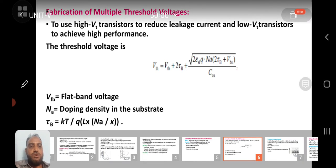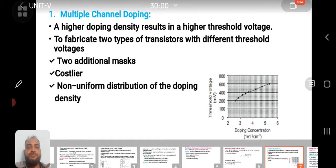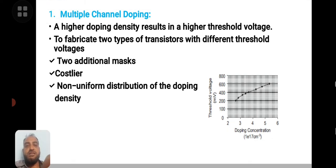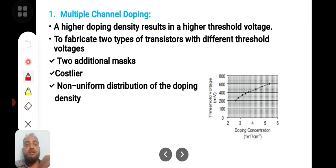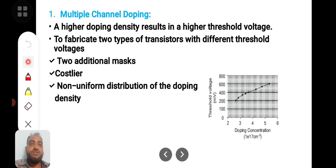One is high threshold voltages for having less leakage and low threshold voltages for high performance. Let's move on to the first concept of this technique: multiple channel doping. Doping concentration NA alters the doping density, which results in a higher threshold voltage.